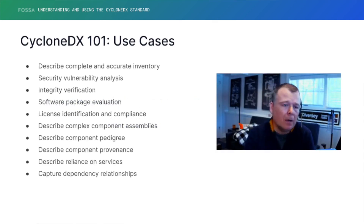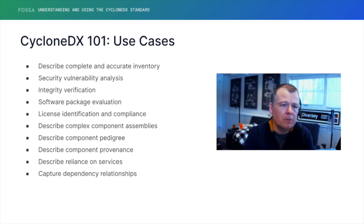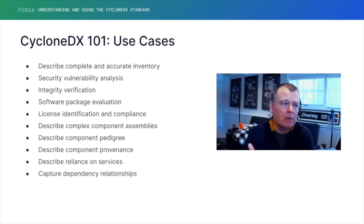Without that inventory, all other forms of analysis become moot and out of order. So it's really important that you form that basis of that inventory initially. And then once you have that inventory, you can perform different types of vulnerability analysis on it. For example, you can do known vulnerabilities with FOSA or the NVD or some other vendor. You can also do unknown vulnerabilities because CycloneDX supports services. So there are a lot of different types of vulnerability analysis that you can perform.